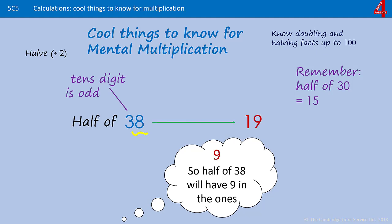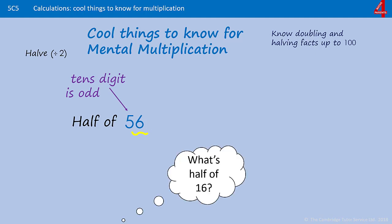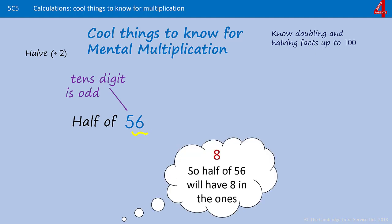Let's try another one. 56. Remember, because this tens digit is odd, we can't assume that there's a 6 in the ones, so it'll have a 3 in the ones when we halve it. We have to think to ourselves, not what is half of 6, but what is half of 16? And that's 8. So half of 56 is going to have an 8 in the ones. And if you remember that half of 50 is 25, that'll help you to work out that half of 56 is 28.